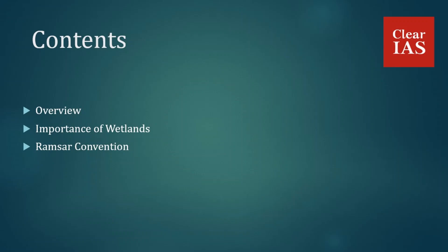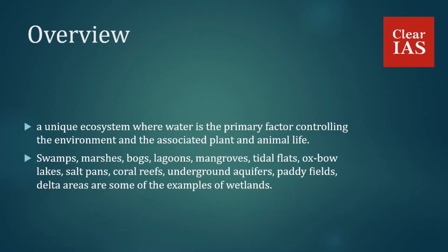Let's start with a very basic definition: what is a wetland? It is a unique ecosystem where water is the primary factor controlling the environment and the associated plant and animal life. They occur in areas where land is covered by water either permanently or seasonally. They are transition zones between deep water and terrestrial ecosystems, and wetlands exist in every kind of climate, from tropical to tundra.